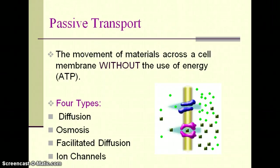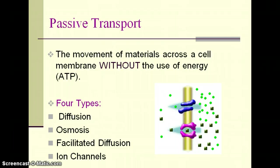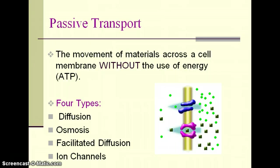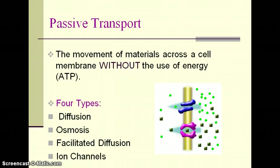Hello class, we're going to review a little bit first on passive transport just in general, and then we will move on to the two parts we missed: facilitated diffusion and diffusion through ion channels. So first, as a quick review, passive transport is when you do not use energy. There's no ATP used — that's our energy molecule.